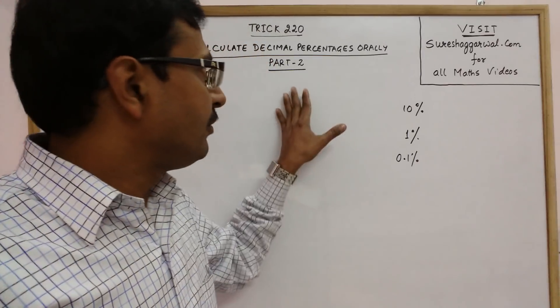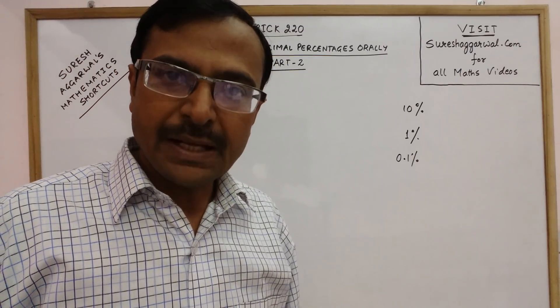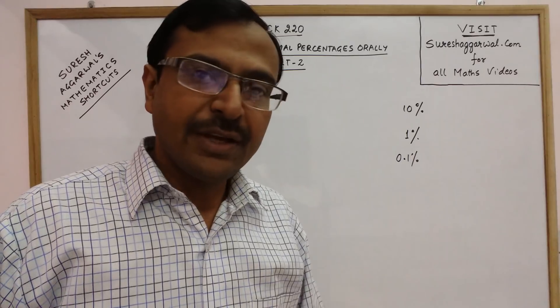Remember in part 1 we have done a trick in which the decimal place, after the decimal place we had a digit 5.